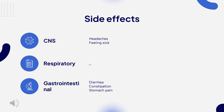PPIs such as esomeprazole have also been shown to inhibit the activity of dimethylarginine dimethylaminohydrolase (DDAH), an enzyme necessary for cardiovascular health. DDAH inhibition causes a consequent accumulation of the nitric oxide synthase inhibitor asymmetric dimethylarginine (ADMA), which is thought to cause the association of PPIs with increased risk of cardiovascular events in patients with unstable coronary syndromes.